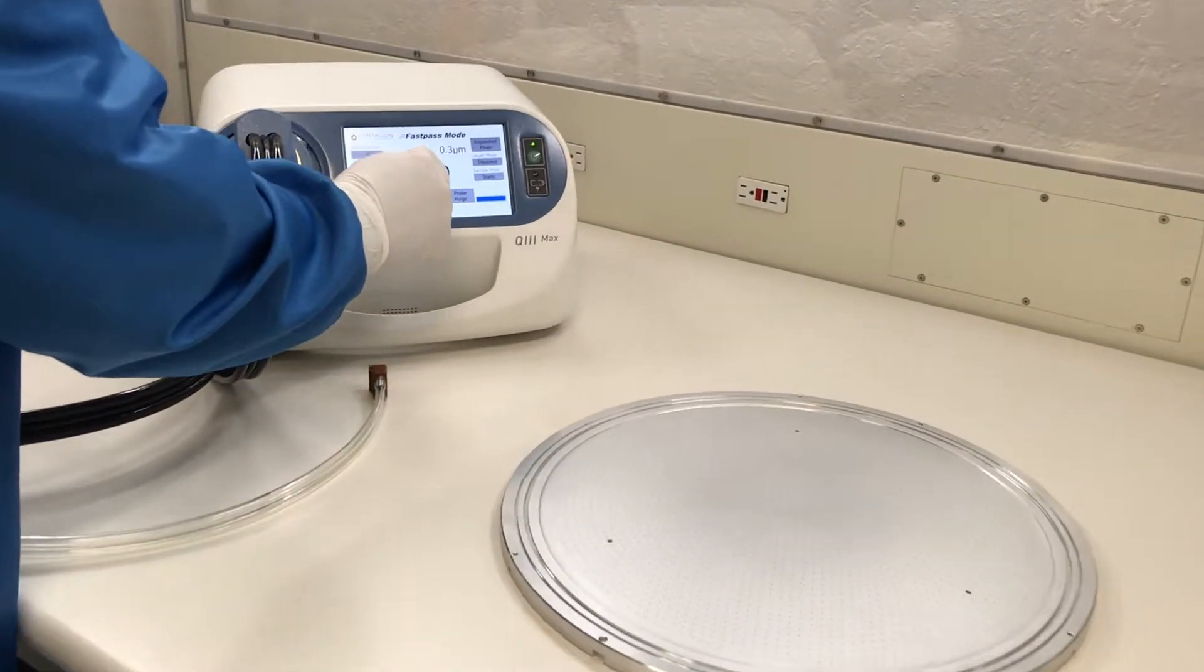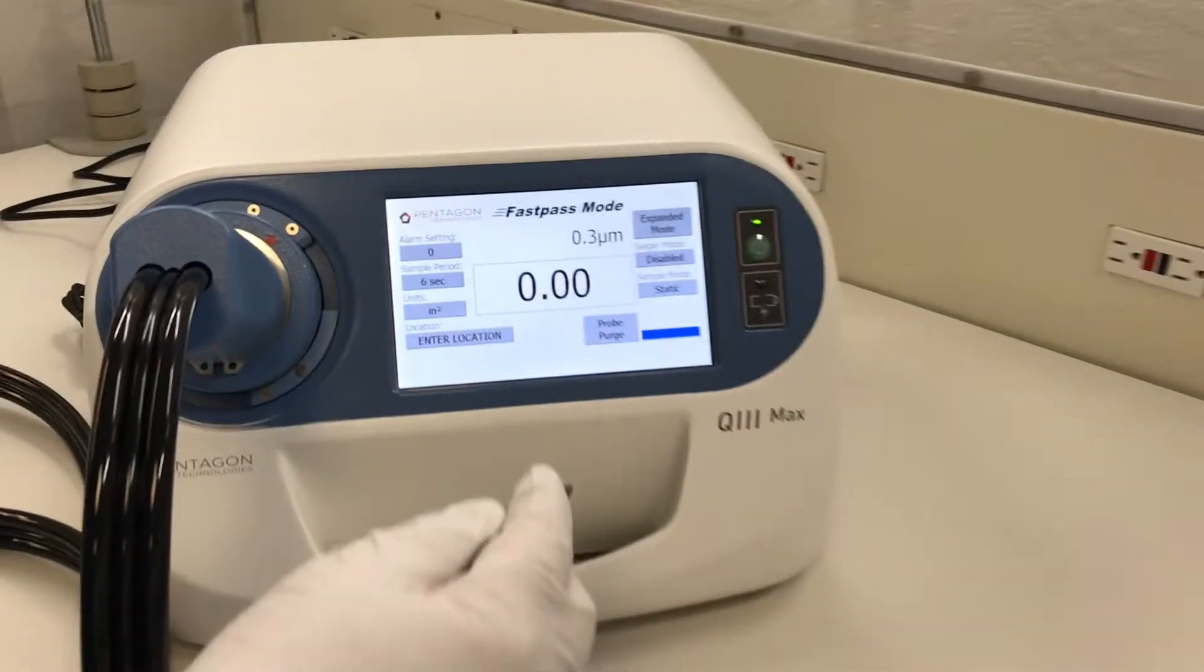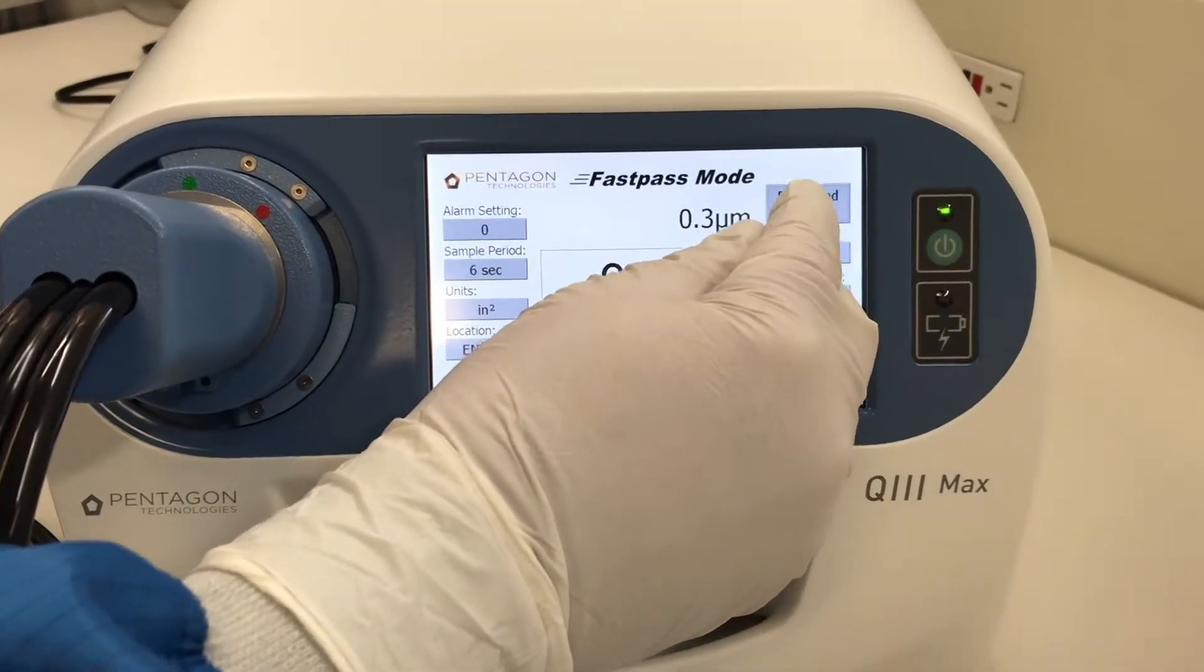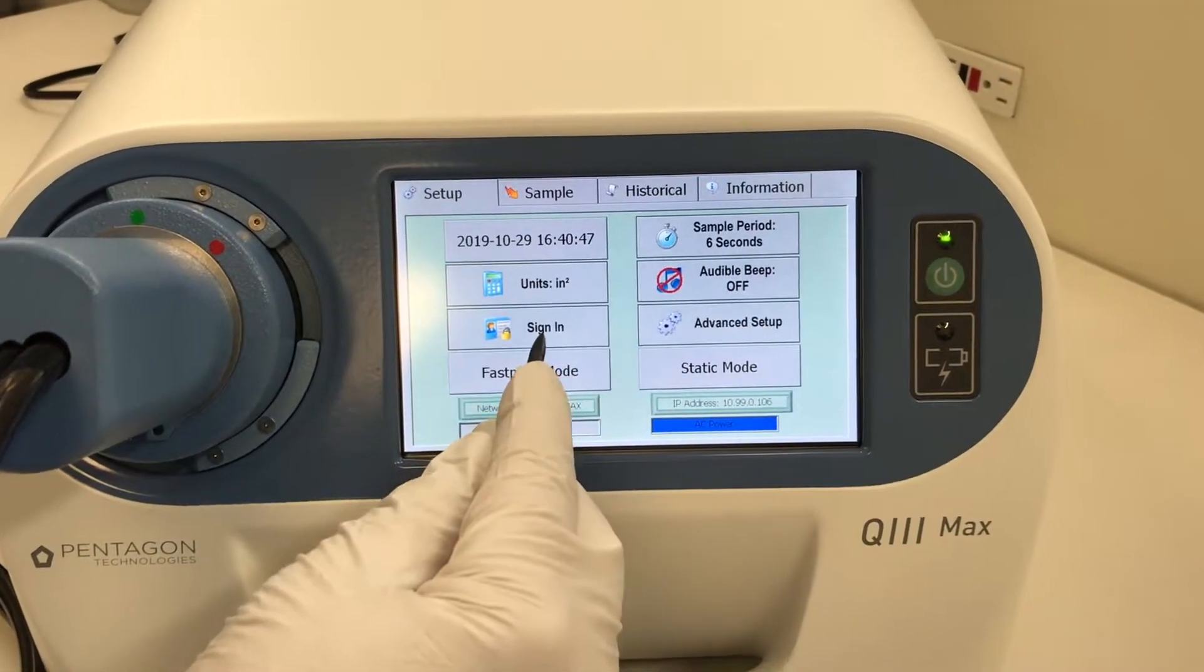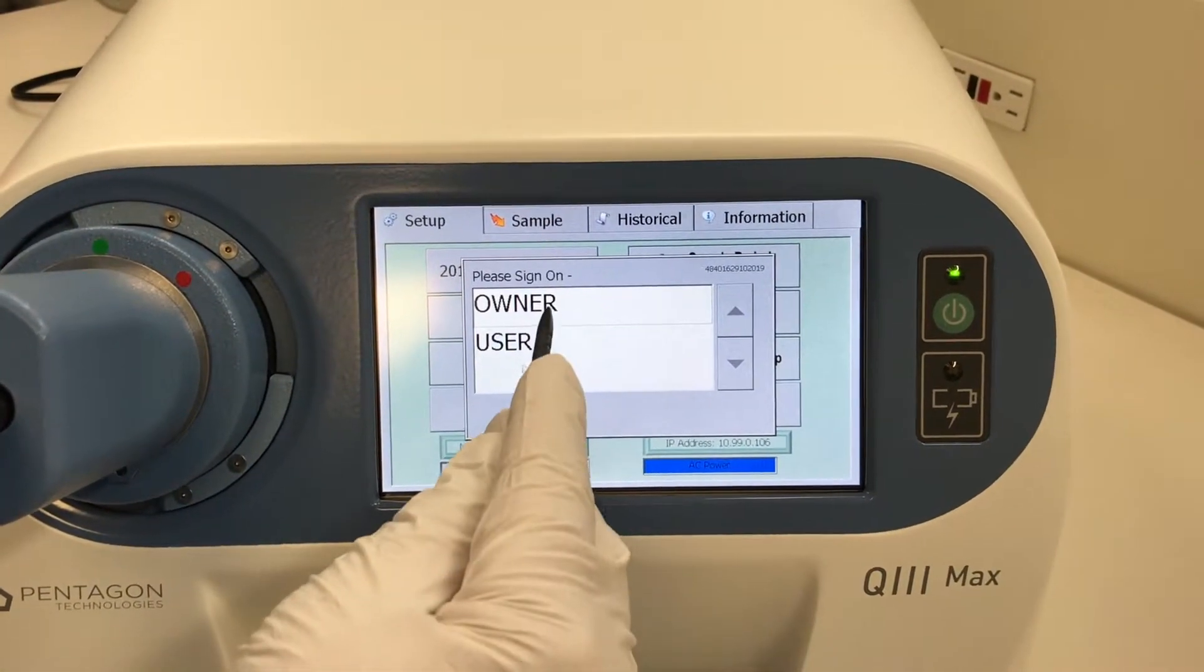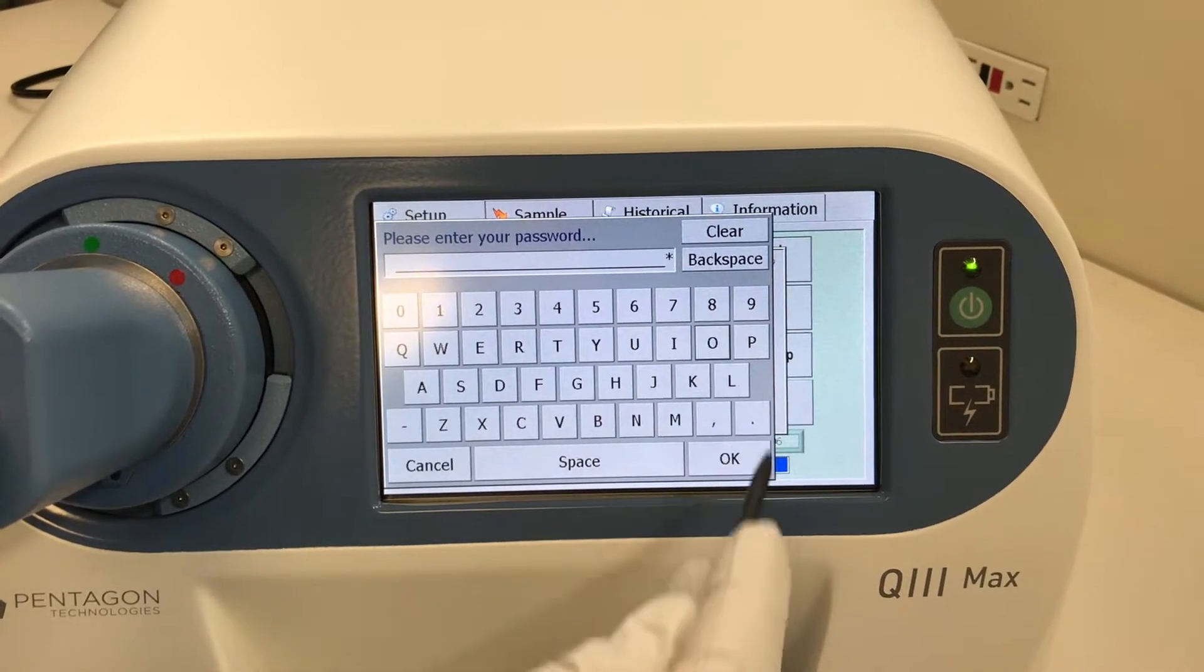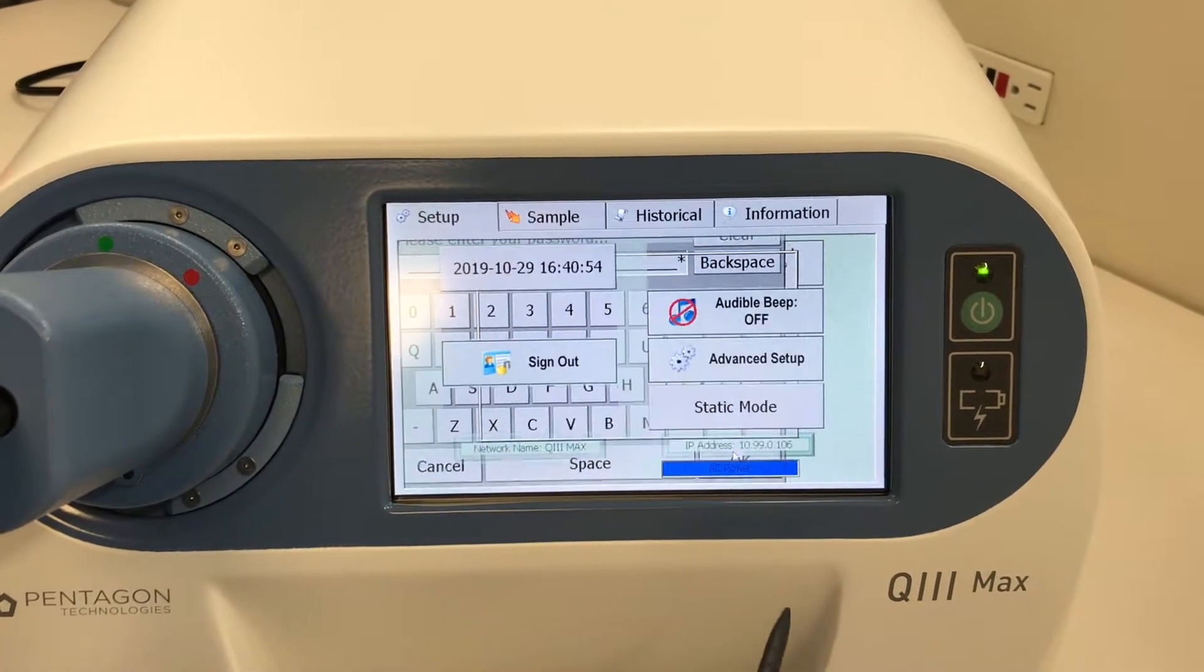The system is initializing, let's get ready to make a measurement. The system comes up in fast pass mode, however to see all six channels let's go to expanded mode and log in as owner with the default password of O.